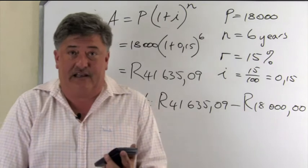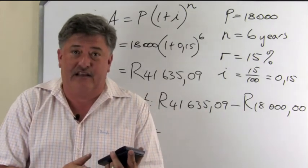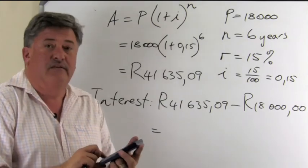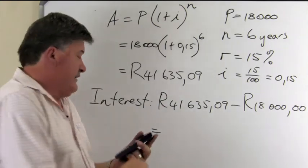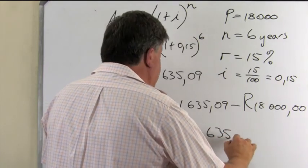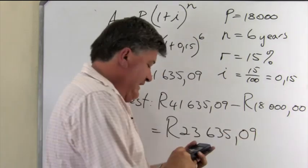So, from this answer that we just calculated, if it's still in your calculator, leave it there. It makes life easier and you just subtract 18,000. And your interest then, 23,635 rand and 9 cents.